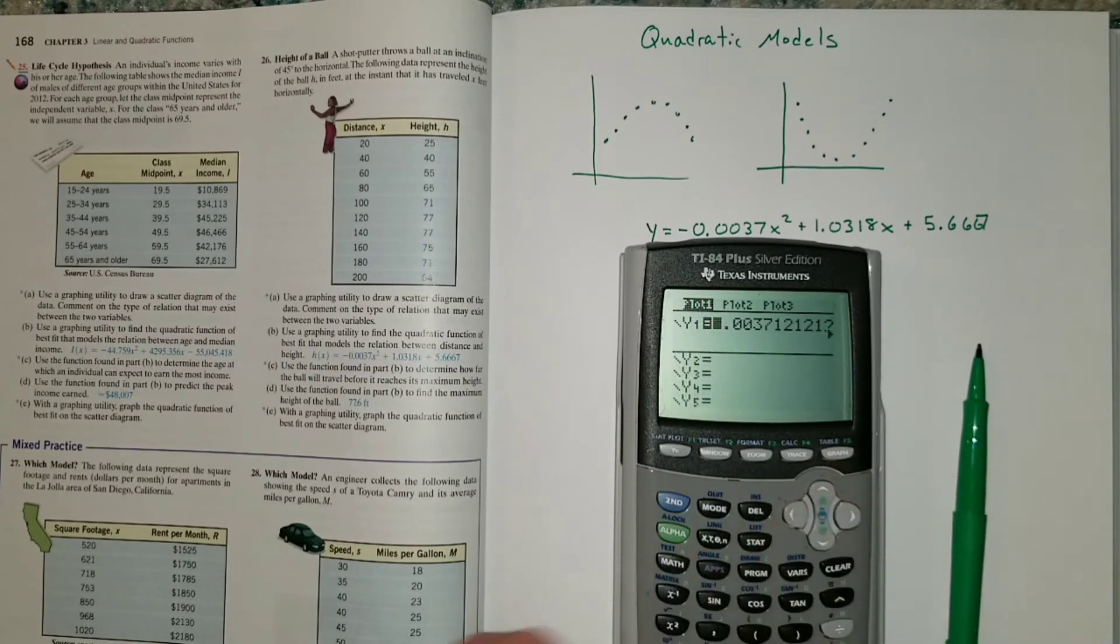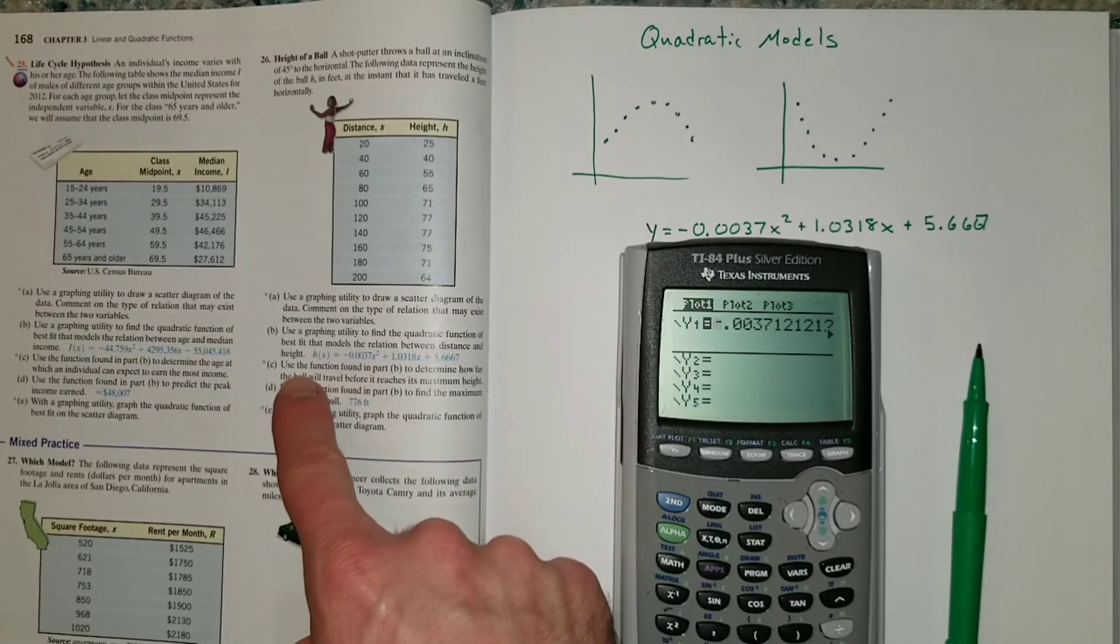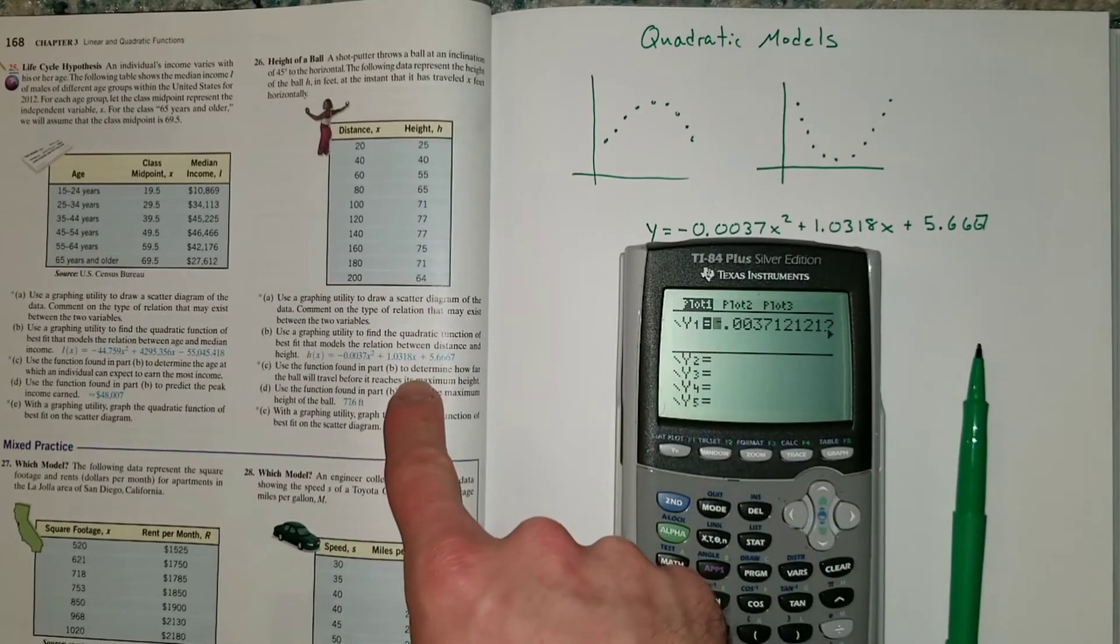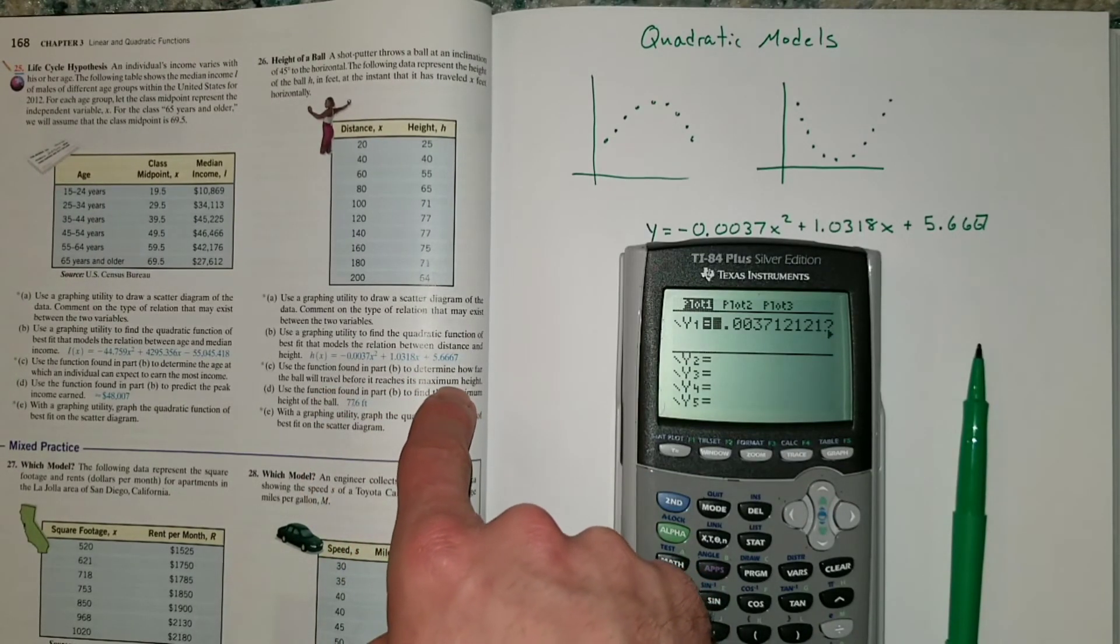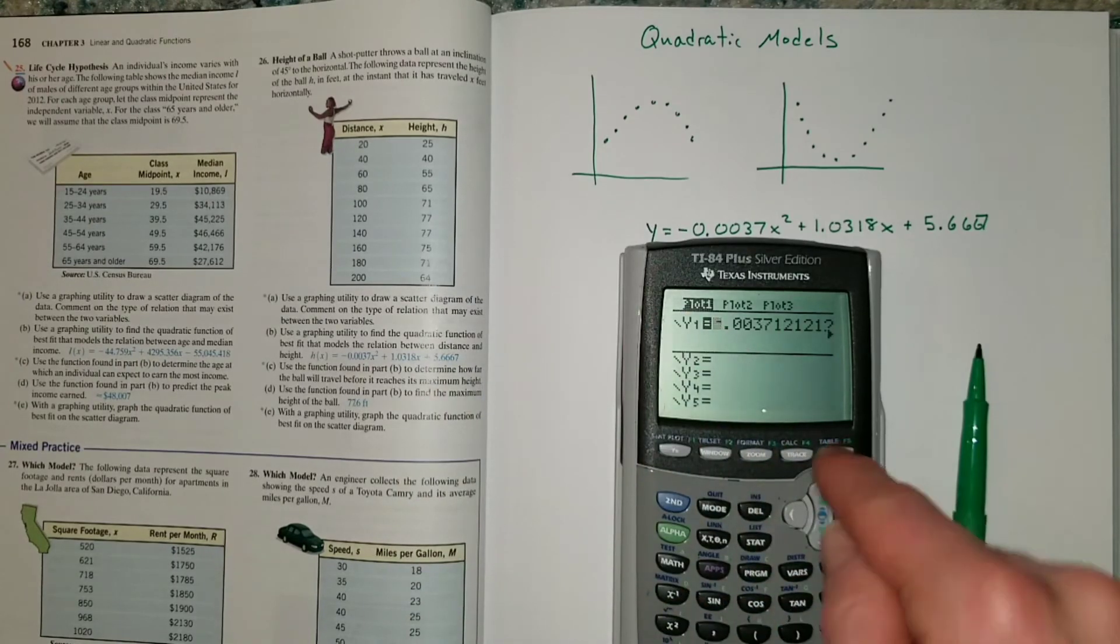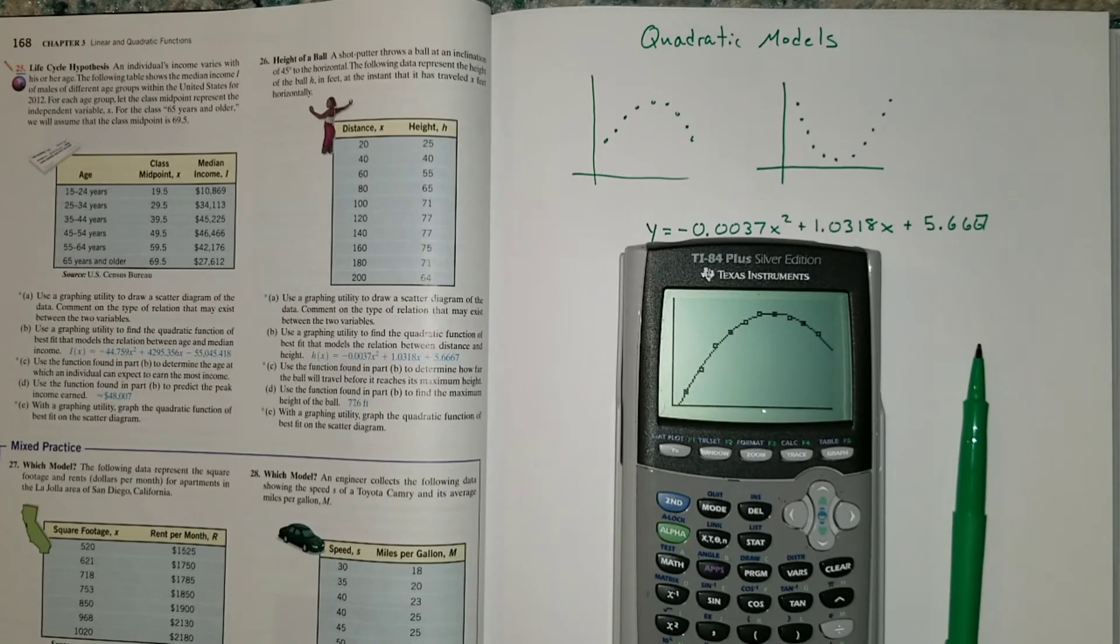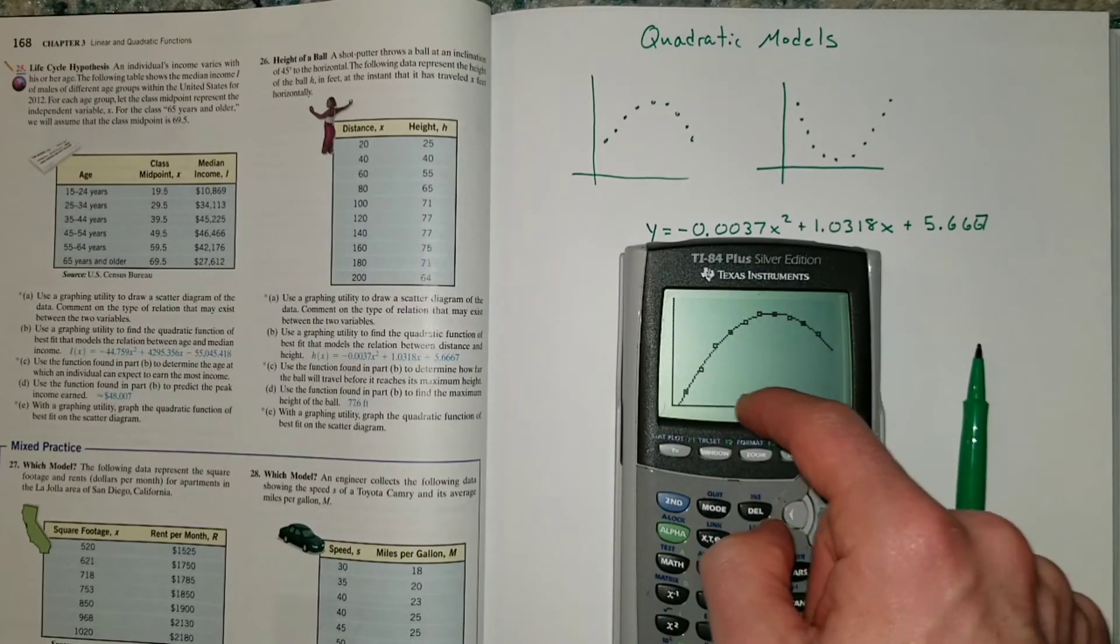If you don't have a calculator that came up with that screen when I went to stat, calculate, quadreg, if you don't have this screen, if you have something else, then you may have to manually type that function in to the Y equals screen in order to plot it. There are some other shortcuts, but I think just typing it in and maybe rounding it off like I did would be the quickest way. Hopefully that's still there. Yes, it is. Now what I want to do, according to the instructions here, it says use the function found in part B, that's this guy, to determine how far the ball will travel before it reaches its maximum height. So let's plot this function with the original data. That's pretty accurate.